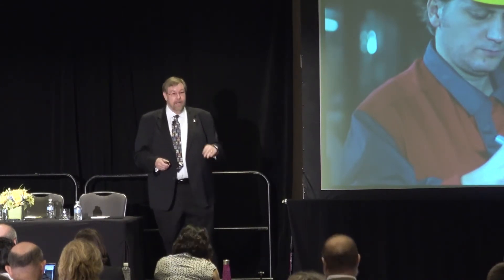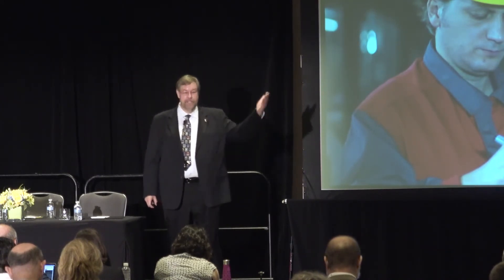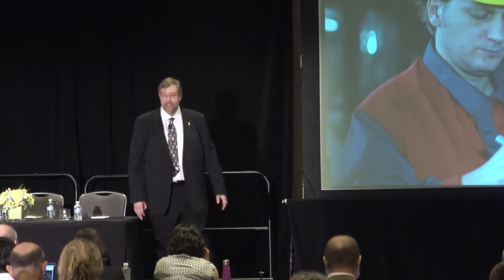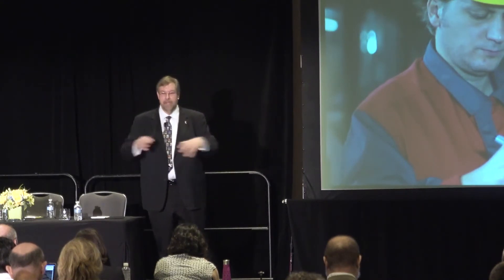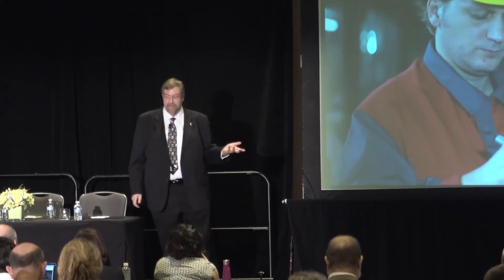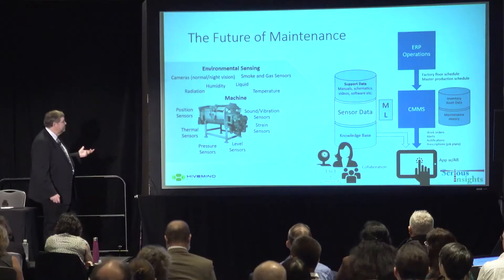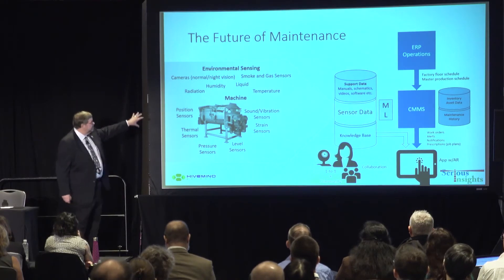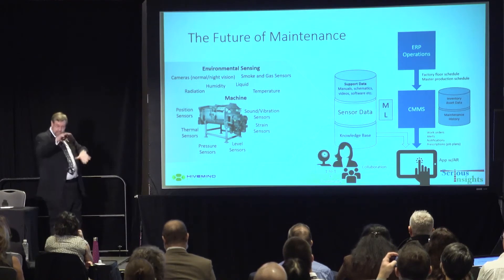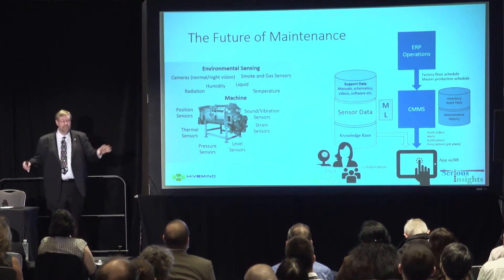Most machines today are still on scheduled maintenance — you get a manual that says every six months do this thing, and every six months you do that. That's easier to schedule: you go on Saturday morning, it's downtime, you fix it. But what we're finding is that machines live in the real world, and the AI and IoT people are saying let's outfit them all with sensors — sound, vibration, stress, pressure, level sensors, smoke and gas sensors in the environment.